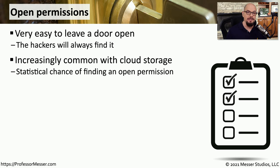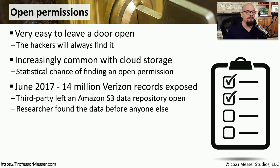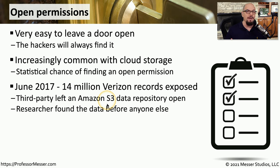Because this data is now located somewhere that can be accessed from anywhere in the world, it's becoming increasingly common to see misconfigurations that allow access to it. One example occurred in June 2017, when Verizon accidentally exposed 14 million records of data in an Amazon S3 data repository. Instead of applying proper passwords and security to the repository, it was left open. Fortunately, a researcher found this data before someone malicious could get their hands on it, and they were able to close the hole without the data becoming public.